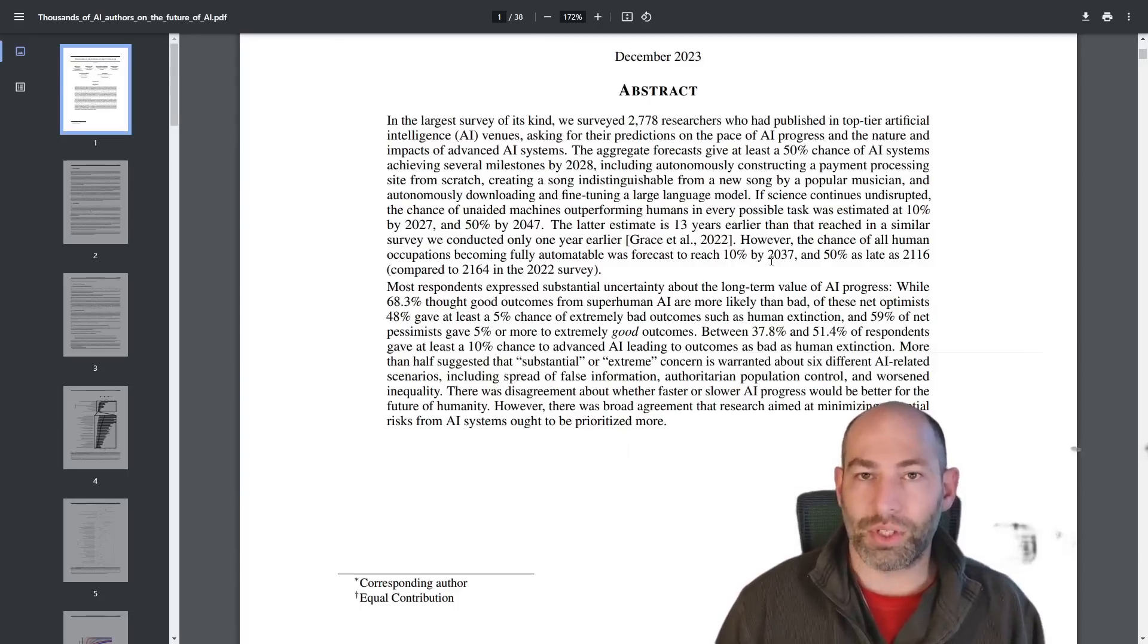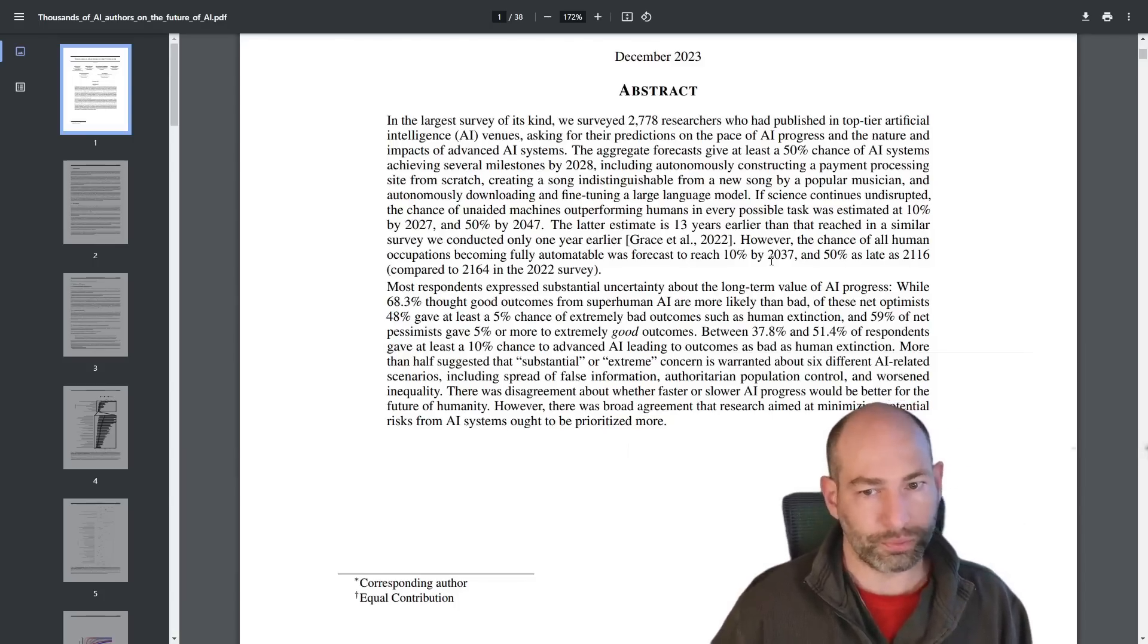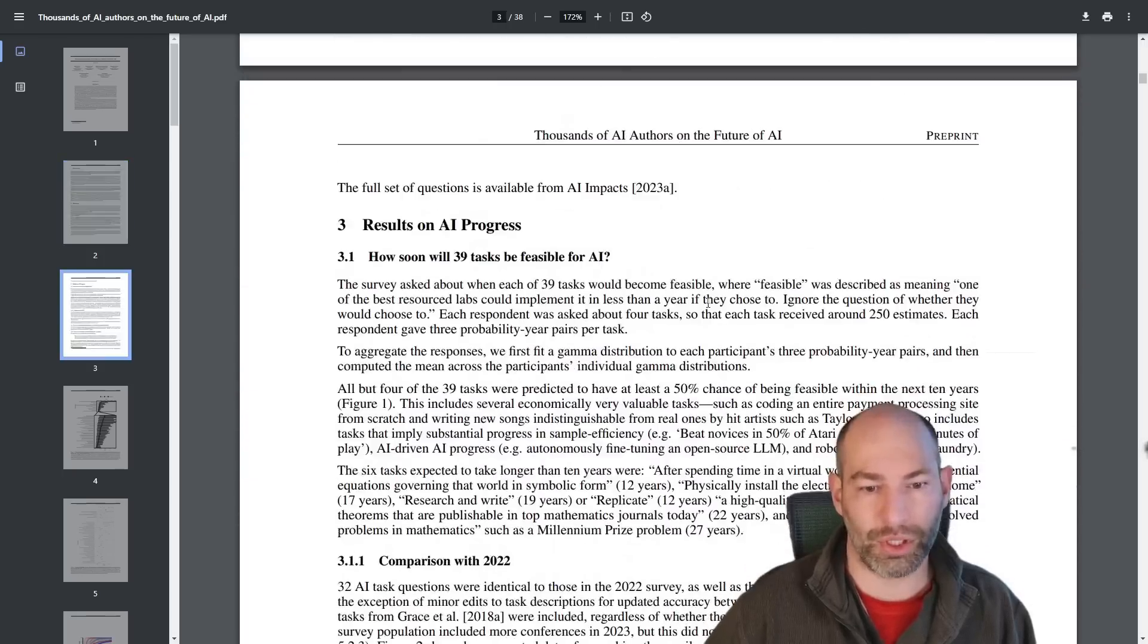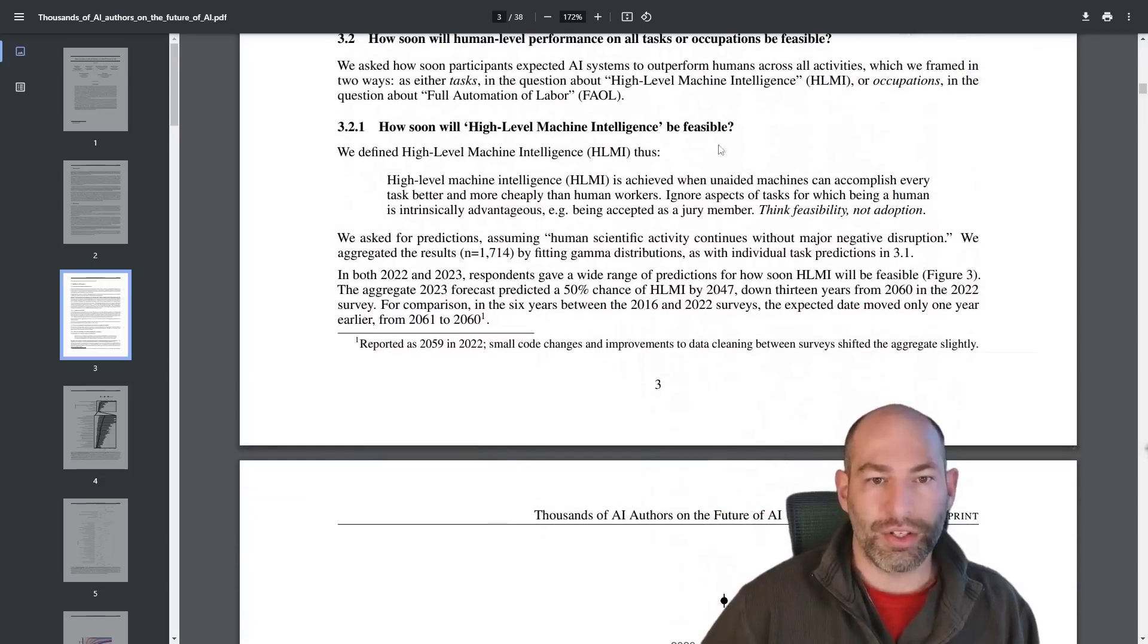So the two milestones that I'm most interested in are FAOL or Full Automation of Labor and HLMI, High Level Machine Intelligence. So let me just go ahead and jump right to the data and then I'll spend the rest of the time unpacking it.